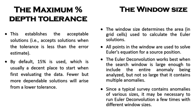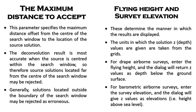The window size determines the area in grid cell sizes used to calculate the Euler solutions. All points in the window are used to solve the Euler equation for a source position. Euler deconvolution works best when the search window is large enough to include the entire anomaly being analyzed, but not so large that it contains multiple anomalies. Since a typical survey contains anomalies of various sizes, it may be necessary to run Euler deconvolution multiple times with different window sizes.